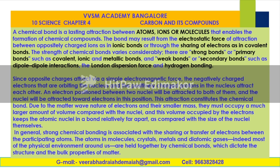Since opposite charges attract via the simple electromagnetic force, the negatively charged electrons orbiting the nucleus and the positively charged protons in the nucleus attract each other. Electron positions between the two nuclei will be attracted to both of them, and the nuclei will be attracted towards the electrons in this position. This attraction constitutes the chemical bond — the attraction between atoms, ions, and molecules together constitutes the formation of a chemical bond.